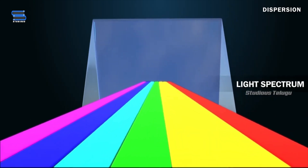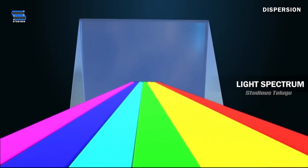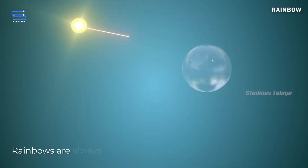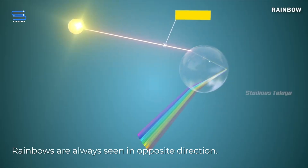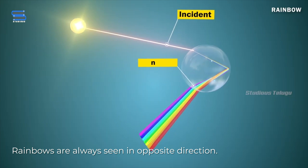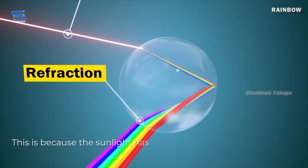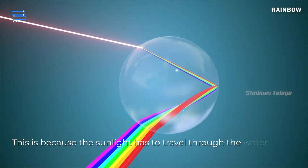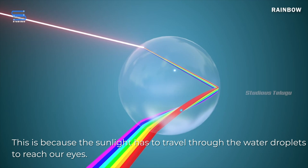This is why rainbows always have the same colors: red, orange, yellow, green, blue, indigo, and violet. Rainbows are always seen in the opposite direction of the sun, because the sunlight has to travel through the water droplets to reach our eyes.